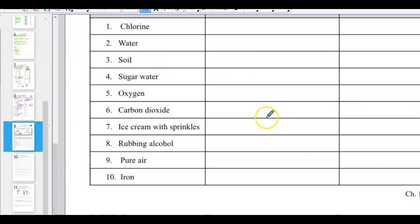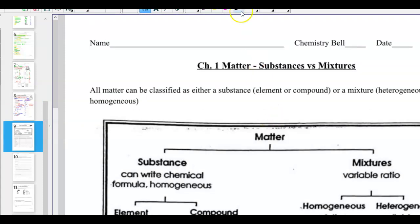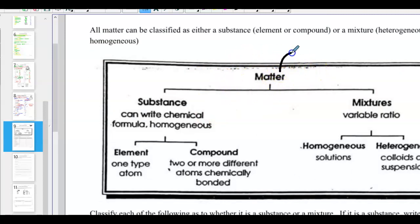Now let's go on to page nine. And we're looking at pure substances versus mixtures. Pure substances can be element or compound. And mixtures can be either heterogeneous or homogeneous. So all matter. How do we know it's matter? It has mass and it takes up space. It has volume. If it's not matter, it's energy. So a pure substance, we can write out the chemical formula. And it's always going to be homogeneous. An element is a single atom by itself. But a compound, we have two or more bonded elements.